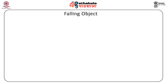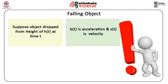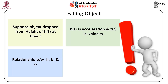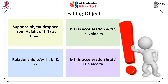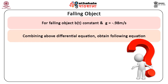Next, we will discuss the falling object. Suppose an object is dropped from a height h(t) at time t. Let b(t) be acceleration and z(t) be velocity. The relationships between h, b, and z are: b(t) = dz/dt and z(t) = dh/dt. For a falling object, b(t) is constant and equals g = −9.8 m/s². Combining these differential equations, we obtain: d²h/dt² = g.